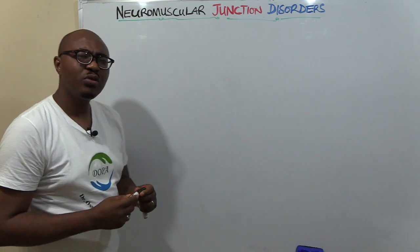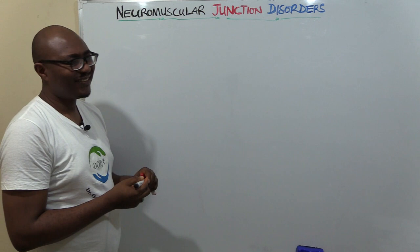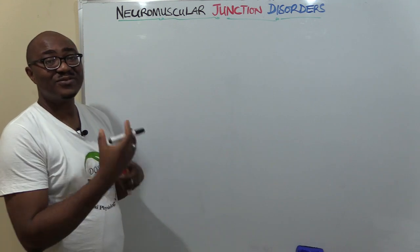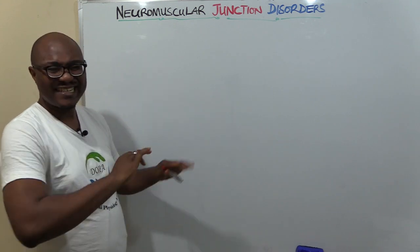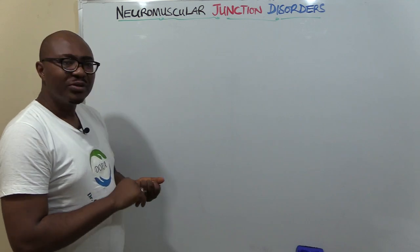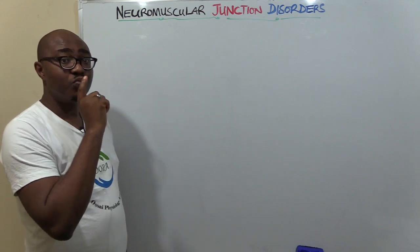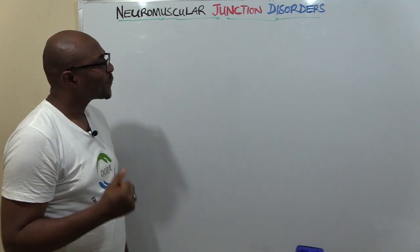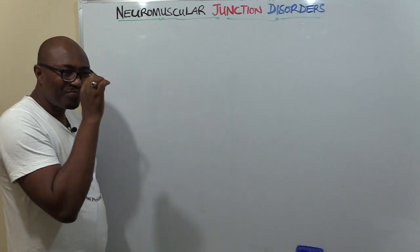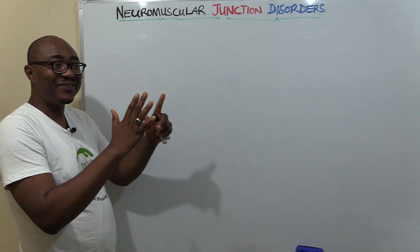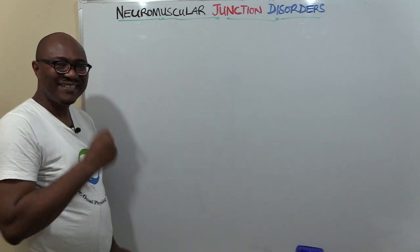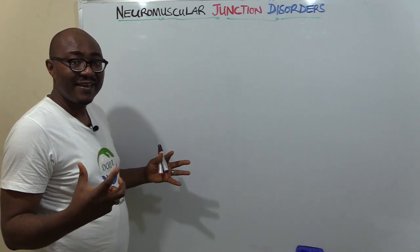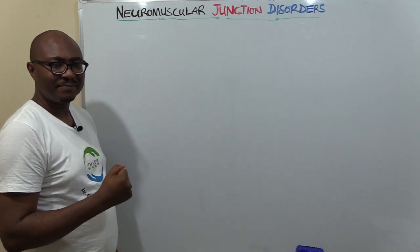Now let's get started. We're going to be dealing with neuromuscular junction disorders. We've learned about the muscle, the mechanism of muscle contraction, and neuromuscular junction synaptic transmission. But there are two major disorders that you must know—they're usually asked during exams. They have problems with the neuromuscular junction, and you must know the differences. They are similar but have some interesting differences.